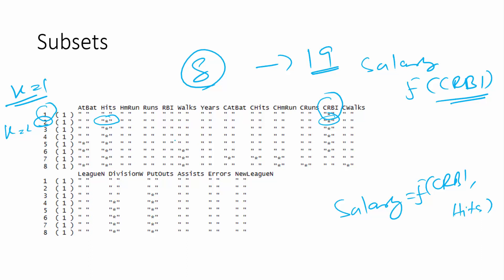When you have a three-variable model, you have Hits and CRBI and then Putouts. When you have a four-variable model, you have Hits, CRBI, Division, and Putouts.